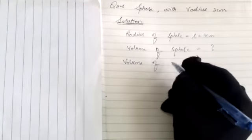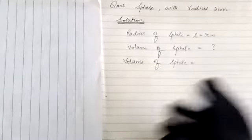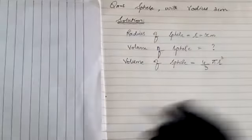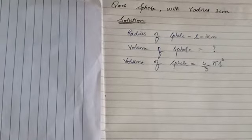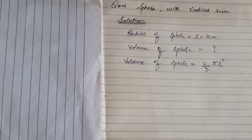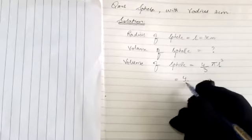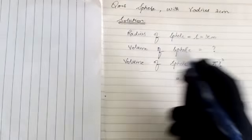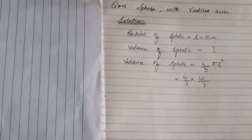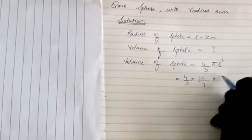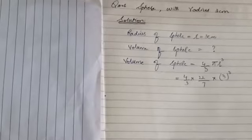Volume of sphere — the formula is 4/3 π r³. You should remember these formulas so that when you put values you don't make mistakes. You should know the circular cone formula too. The key learning today is the formulas. Putting values is not a difficult task.